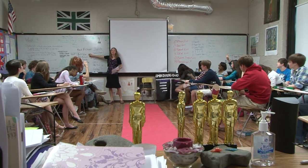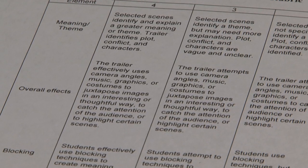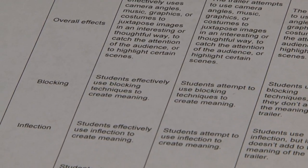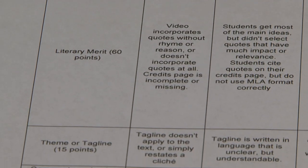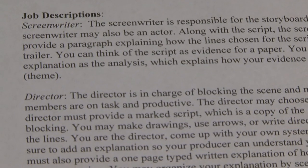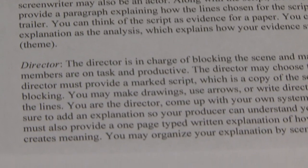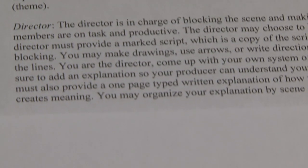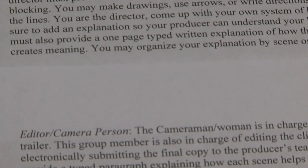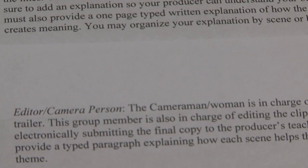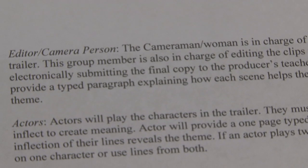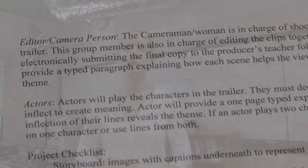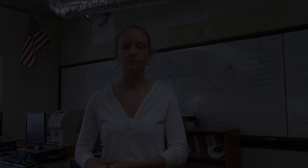They have a written component as well. They're assessed based on a rubric that I've designed that looks at each element, and they have one group grade for their trailer. Then they each turn in a written component explaining how their element of the project — so if they're an actor, they talk about how their acting and inflection helps show the theme of the text. If they're a director, they talk about their project. They have the same final project for the trailer, but different written components specific to their job within the project. Finally, they get to assess themselves on how well they participated within the group based on a rubric, and they get to give feedback on how well their group members participated as well.